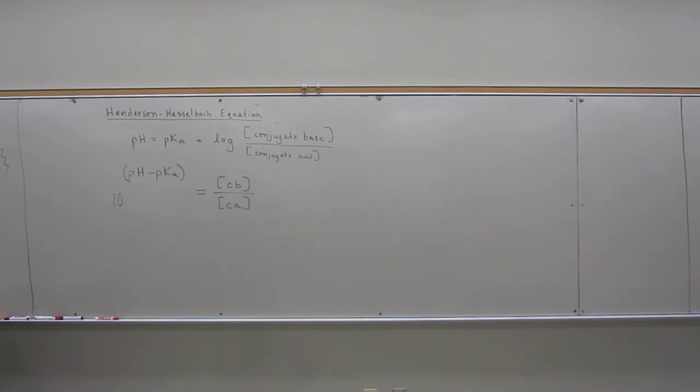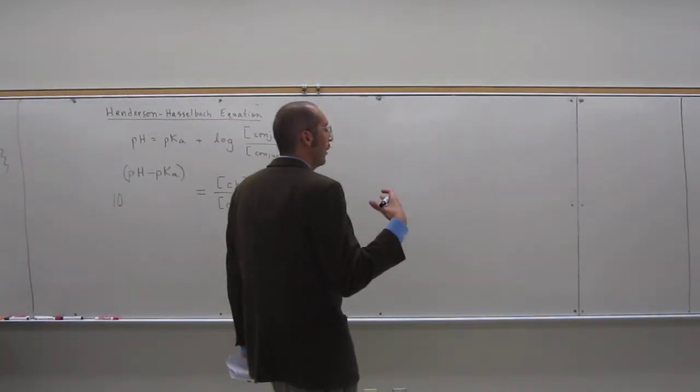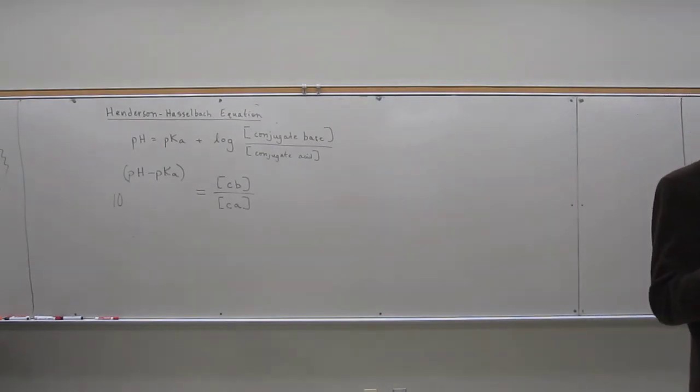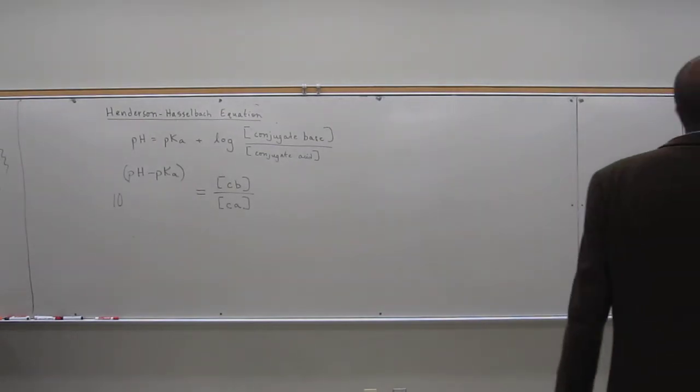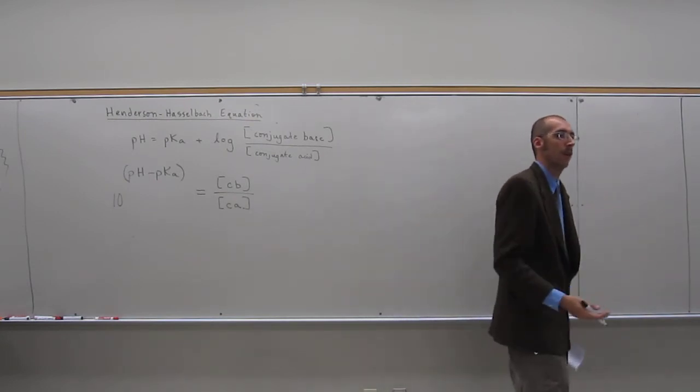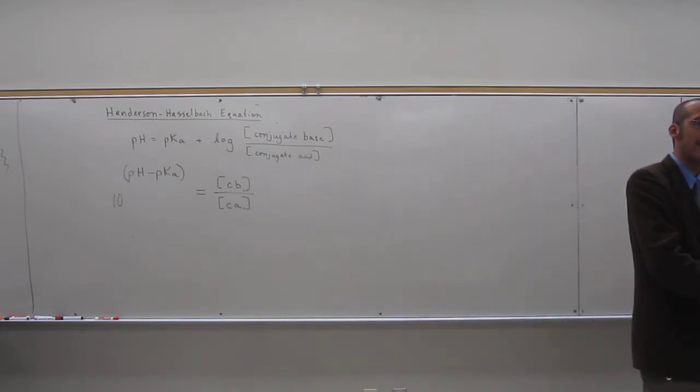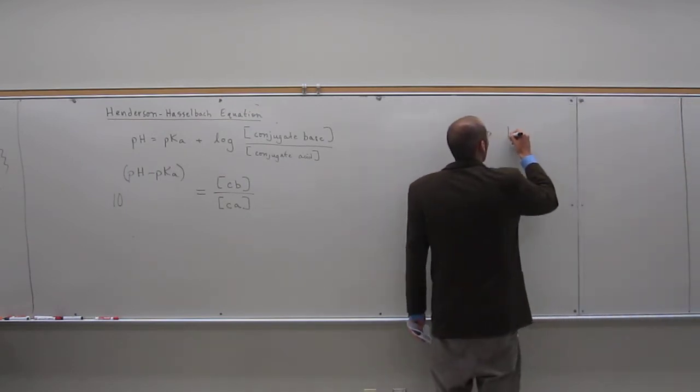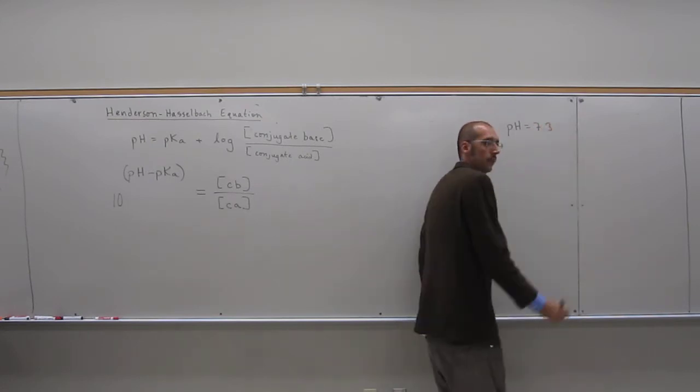The next thing you need to know, and this is just a number, I'll probably give it to you in the problem, but physiological pH is approximately 7.3. So that's what we're going to do these problems on. We're going to say in that physiological pH what species is going to be.